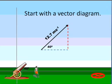The first thing we need to do is start with a vector diagram. You can see here that we have 12.7, which represents the velocity of the cannonball. This velocity can be broken up into horizontal and vertical parts. The horizontal part is the blue dashed line, and the vertical part is the red.